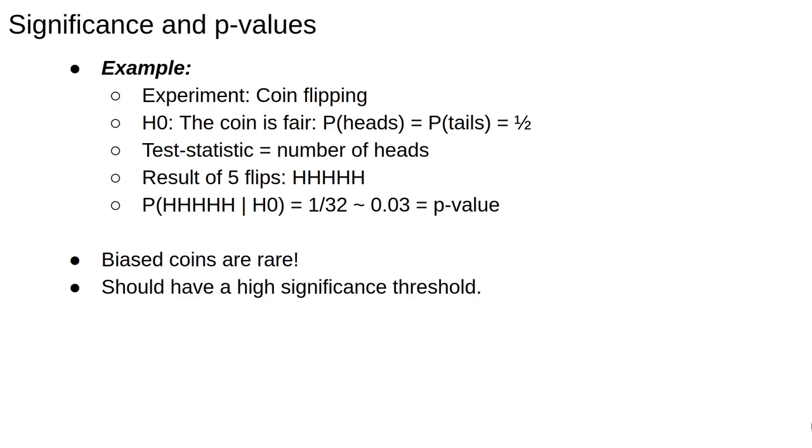In this case, the p-value is therefore 0.03. Since we know that biased coins are rare, we should have quite a high threshold for rejecting the hypothesis that the coin is fair. That is, our alpha will be small. So 0.03 is low, but likely not low enough. And in conclusion, we can basically find that there is some hint that the coin is biased, but we need to do more experiments to determine if we have a really biased coin.